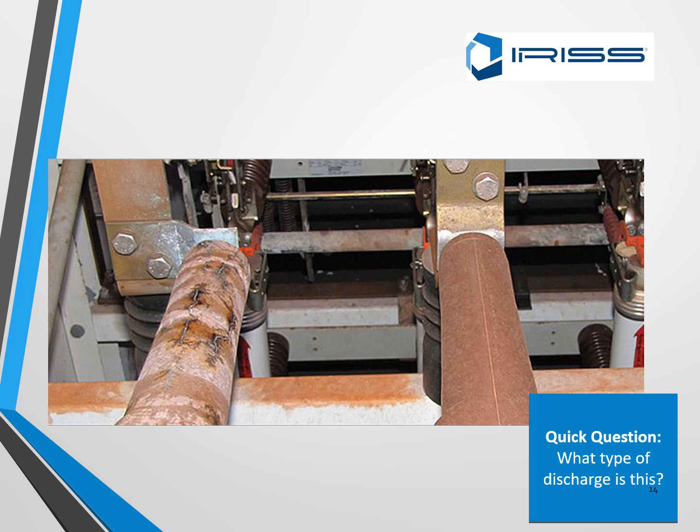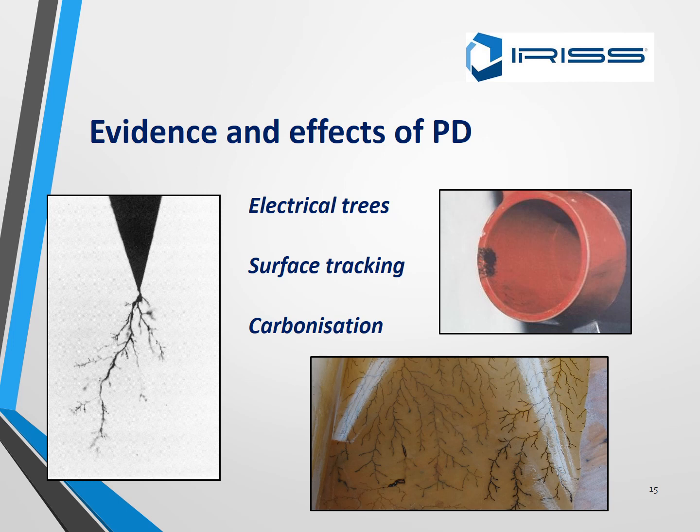A quick question: what type of discharge is this? As you can see, we started with corona — we know it's corona because of the white powder — but it has now progressed to something else: tracking. You can see the carbon residue as well. This slide shows further evidence of the effects of PD — the electrical tree, surface tracking, and carbonisation.